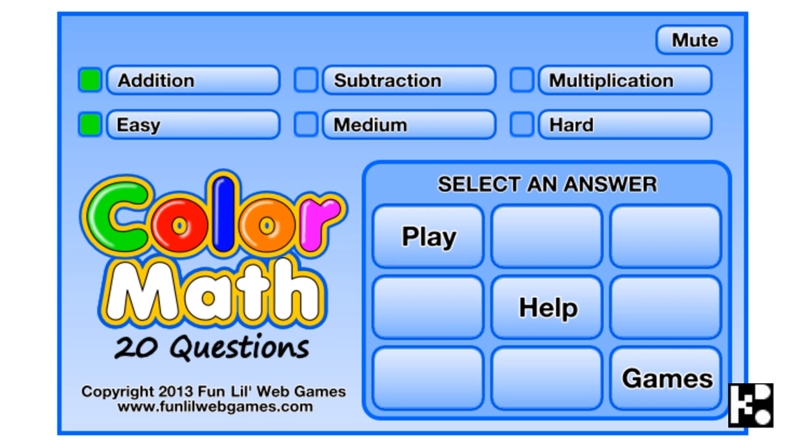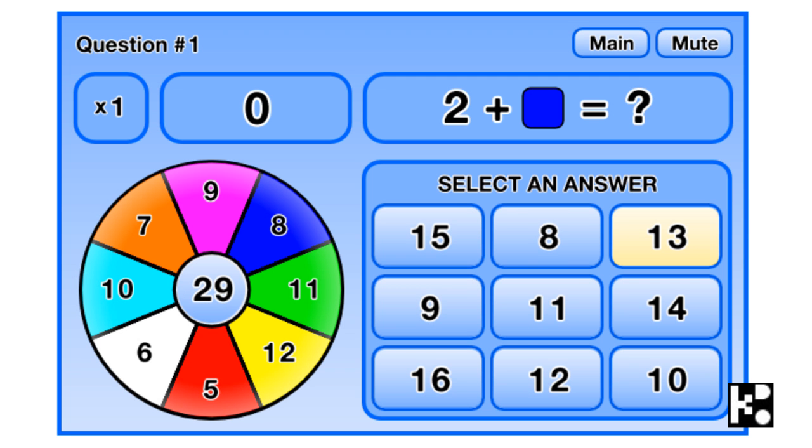What they're going to do is use a color pattern where each color represents a number. Say for addition, blue will correspond with 8. So 2 plus 8, and then you choose the answer.